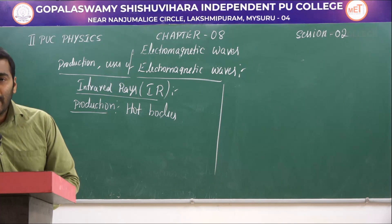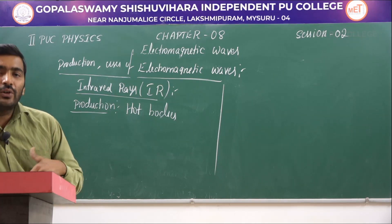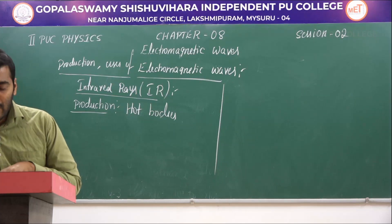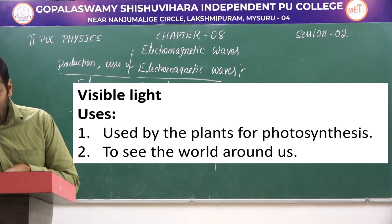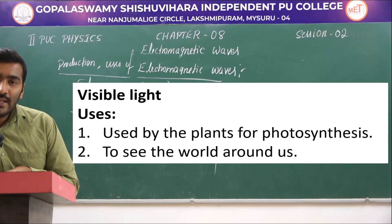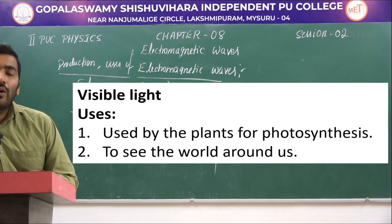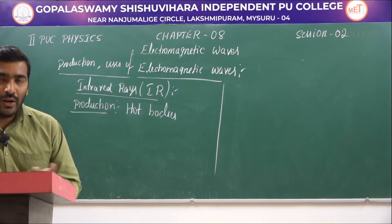Visible light is produced due to electron transitions in an atom — when an electron transitions from one energy level to another, it emits visible light. The uses of visible light include photosynthesis in plants and enabling us to see the world around us, since our eyes are sensitive to visible light.